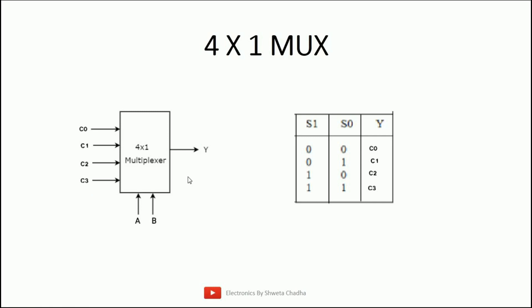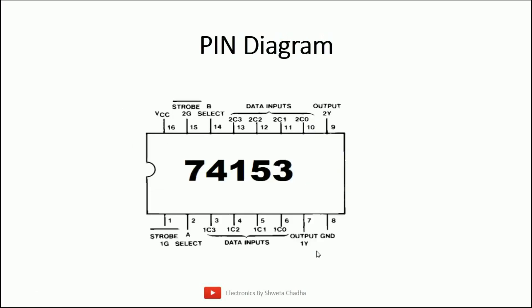In a 4×1 multiplexer, when the select lines are 0-0, output is C0; when 0-1, output is C1; when 1-0, output is C2; and when 1-1, output is C3. This is the basic operation of a 4×1 multiplexer. Now let's look at the pin diagram of the 74153 IC.